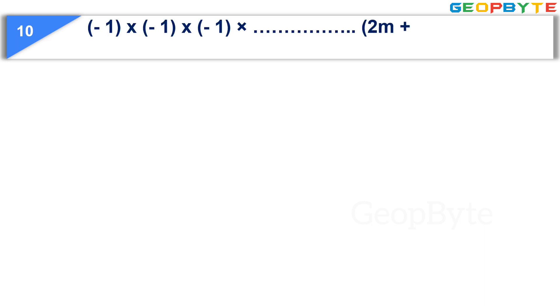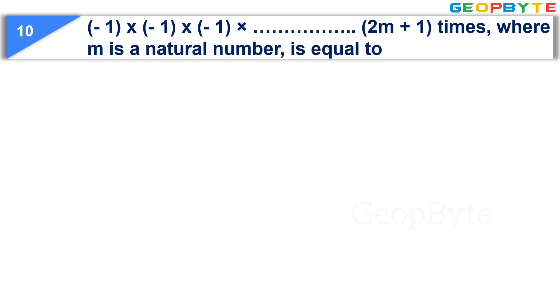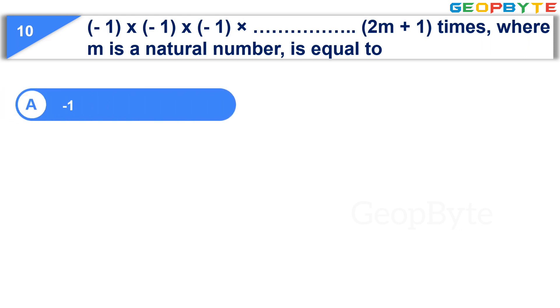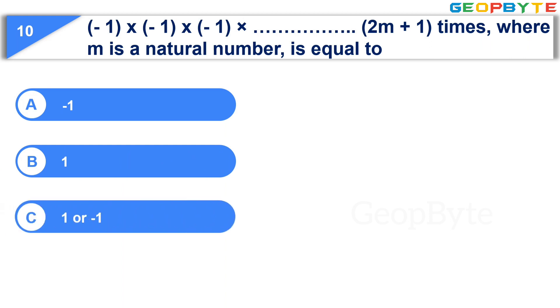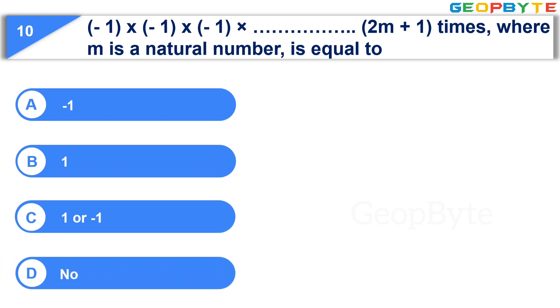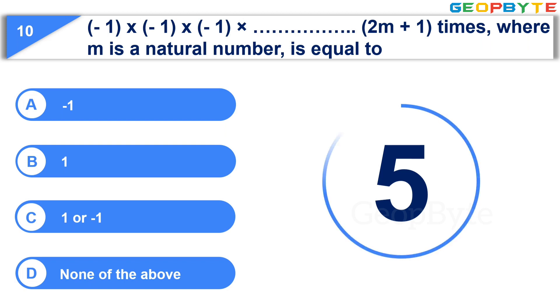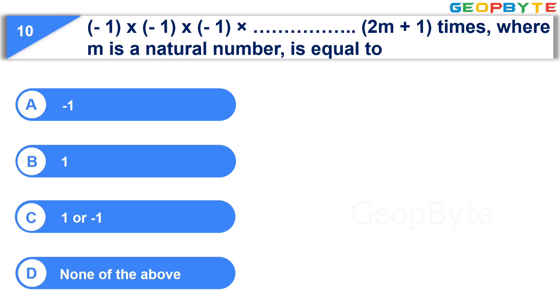The tenth question is: minus 1 multiplied by itself (2m + 1) times, where m is a natural number, is equal to — Option A: minus 1, Option B: 1, Option C: 1 or minus 1, Option D: none of the above. Your time starts now. Your time is up and the correct answer is Option A: minus 1.